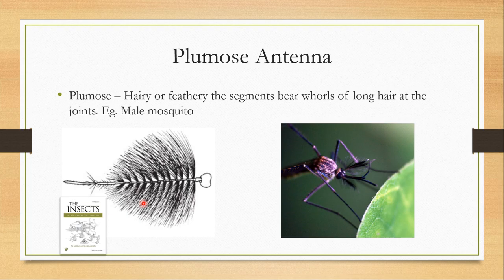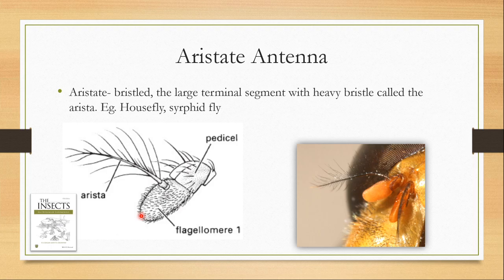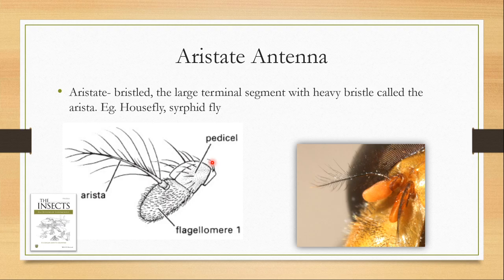This one is the aristate antennae, found in house flies and syrphid flies. After the pedicel, the flagellum is made up of only one flagellomere or one segment, and that segment has a bristle known as the arista. So this type of antennae is known as the aristate type and it is found in house flies and syrphid flies.